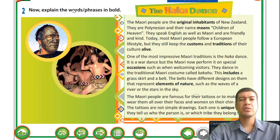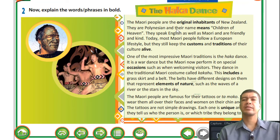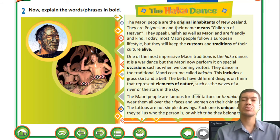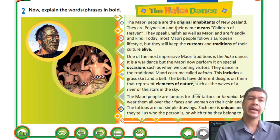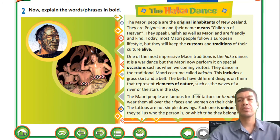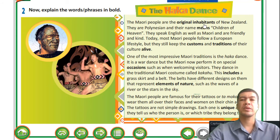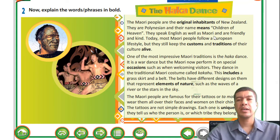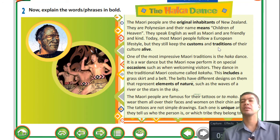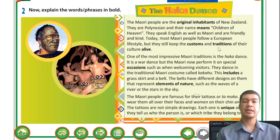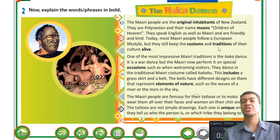Okay, explain the words or phrases in bold. Original inhabitants - they are the first people to occupy the land. The Vietnamese people were the first people to come to Vietnam and occupy the land. They are Polynesian and their name means 'children of heaven.' Customs and traditions - we've touched on it. You guys are familiar with certain customs and traditions.